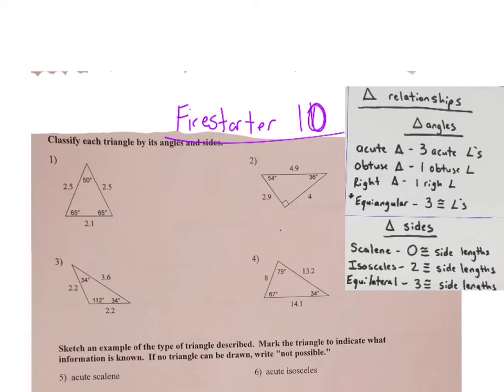So, all we're going to do is basically answer our questions here. So, classify each triangle. Number one, I see one, two, three angles that are all less than 90, so I know it's acute. Now, I'm going to look at the side lengths. 2.1, 2.5, and 2.5. Well, 2.5 and 2.5 are the same. That means I have two congruent side lengths. So, it's going to be isosceles. So, that's just acute isosceles.